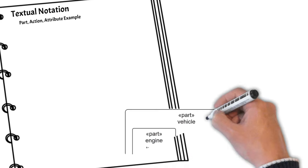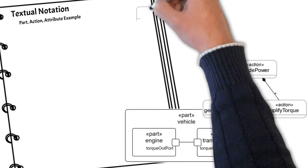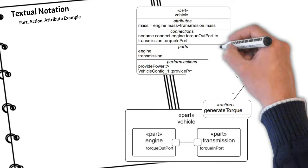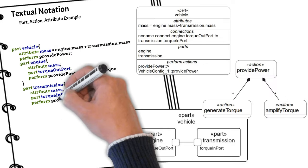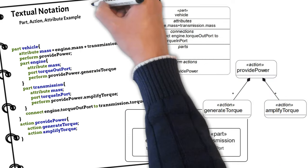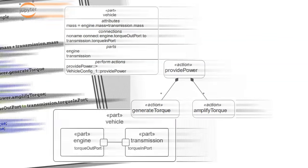SysMLv2 has a textual notation. We will show four examples. Here's the first example of a part with an action and attribute. Note that Jupyter Notebook is currently an ideal method to view the scripting notation.